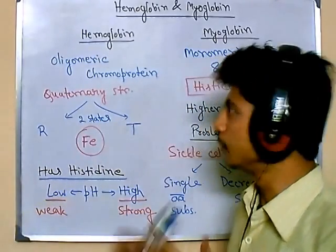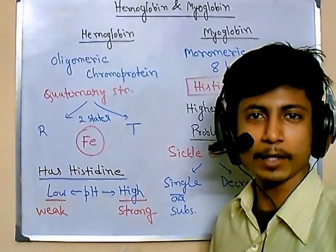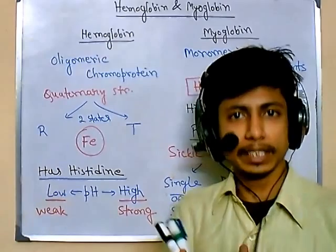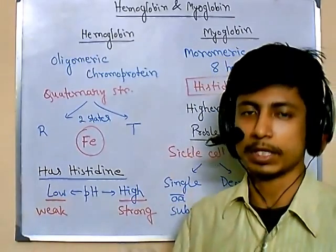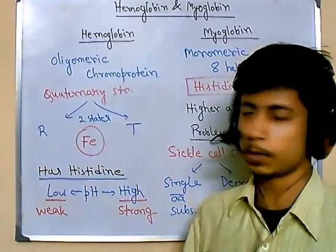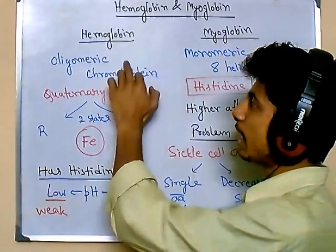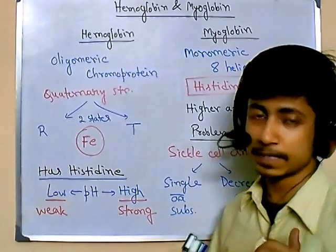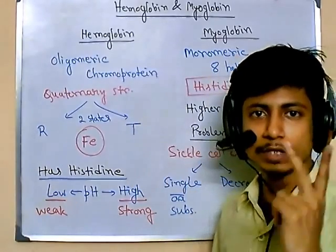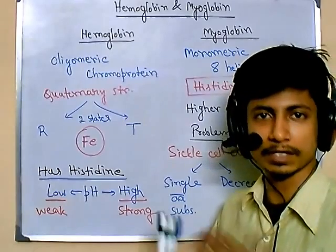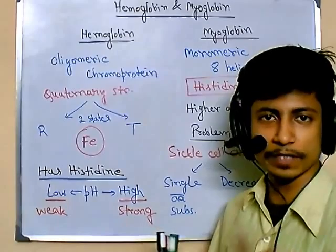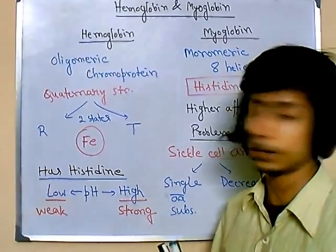Hemoglobin is a core molecule required for carrying oxygen in our blood. It is a huge globular protein — a soluble globular protein. It is oligomeric in nature, meaning it is made up of more than one subunit. Hemoglobin is made up of two different subunit types: alpha and beta, with two of each, so four subunits total.